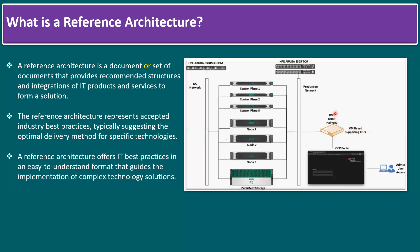We also need additional components such as VM-based supporting infrastructure — DNS, DHCP, and HAProxy. Once deployment is complete, we can access the infrastructure using the OCP (OpenShift Container Platform) portal with a kubeadmin user. So the reference architecture tells us we need six servers, one storage device, a bastion node, VM-based supporting infrastructure, iLO connectivity, and switches.